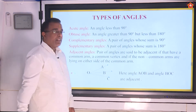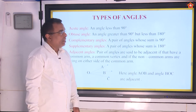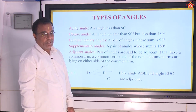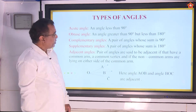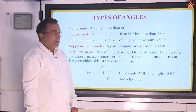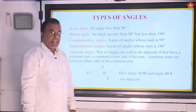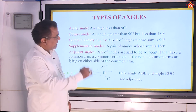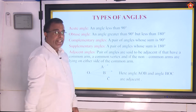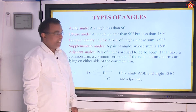Obtuse angle: if the angle is greater than 90 degrees but it should be less than 180 degrees. Examples of obtuse angle: it can be like 100, 125, 179 like that. So the condition for an obtuse angle is it has to be greater than 90 degrees but lesser than 180 degrees.